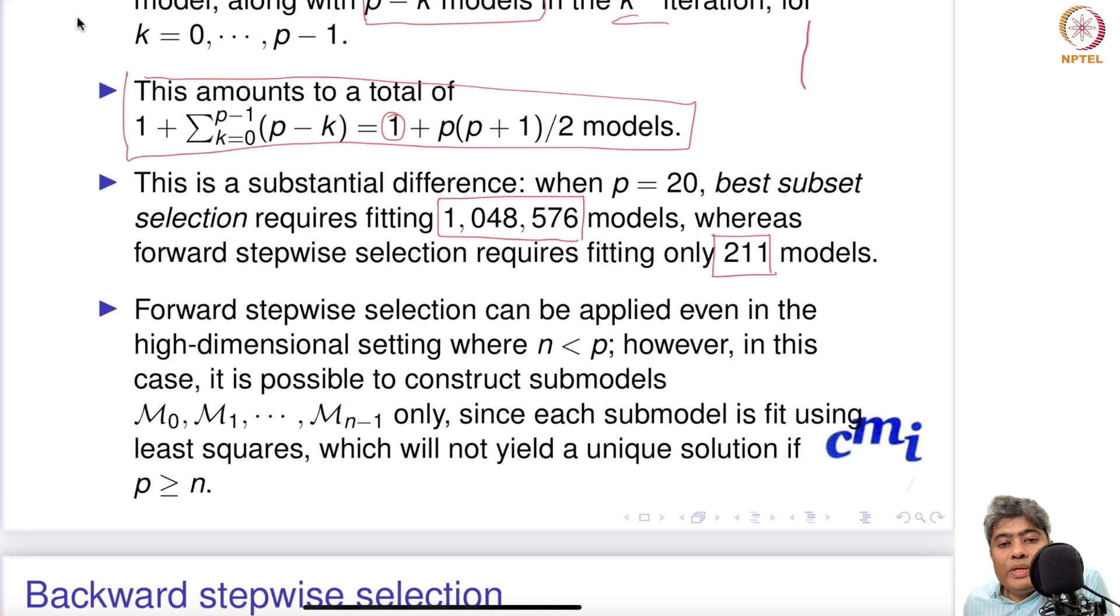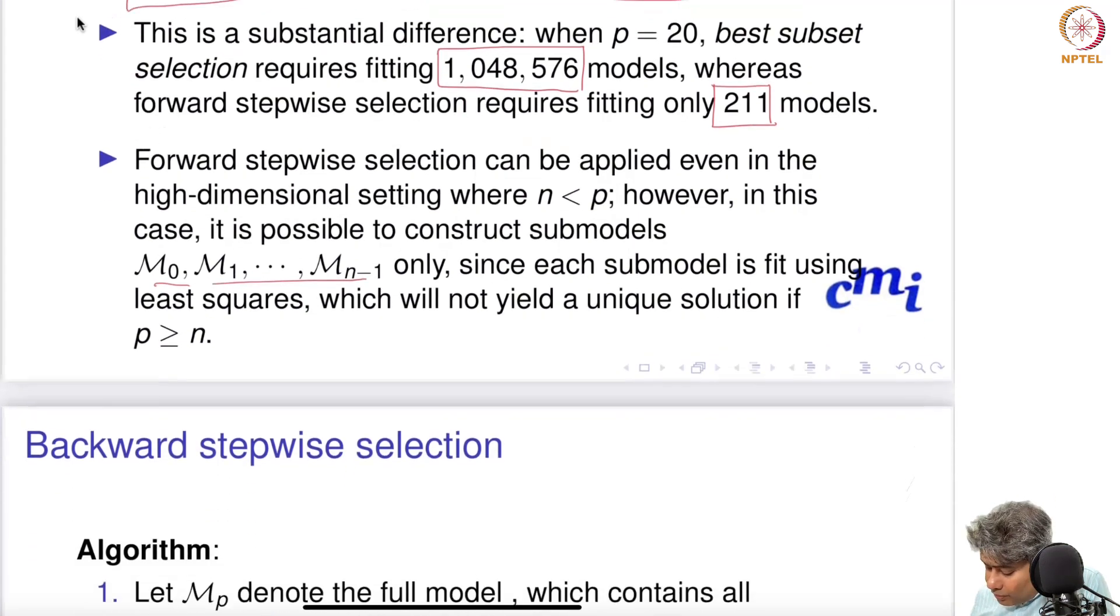Forward stepwise selection can be applied even in the high-dimensional data setting where n is less than p. In this case, it is possible to construct submodels up to n-1 only. So it is doable even in high-dimensional problems.